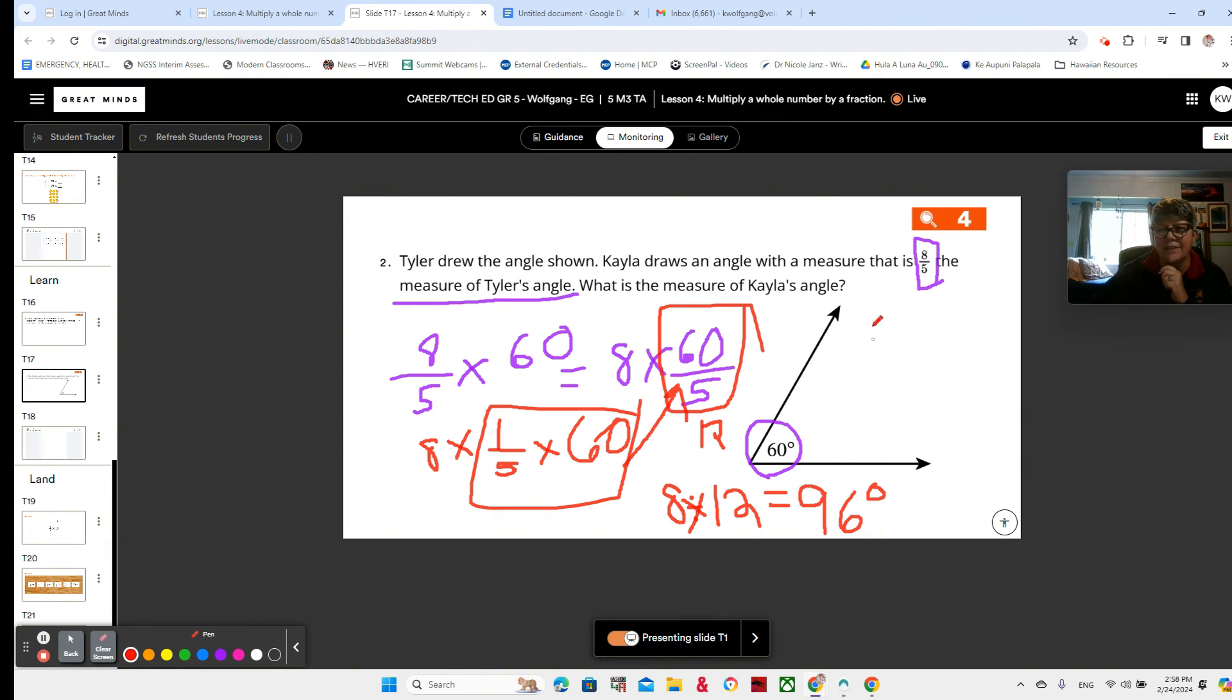So the measure of Kayla's angle is 96 degrees. Make sure that you're writing sentences for your word problems. Kayla's angle is 96 degrees. And double check that it makes sense: eight-fifths—five-fifths would be 60 because that would be one, so more than that, 96 degrees. Nice job. I'll see you in the next video. Thank you for your hard work. Aloha.